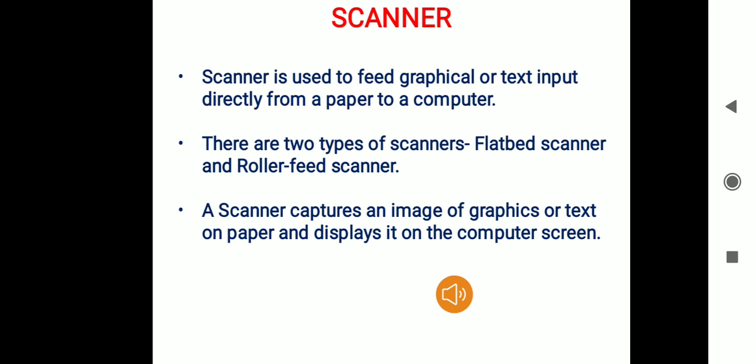The next type of input device is the scanner. The scanner is used to feed graphical or text input directly from a paper to a computer. For example, if you have a paper with something written on it and you want the content to appear on the computer screen, you need a scanner. The scanner captures the image from the paper and then displays it on the computer screen.